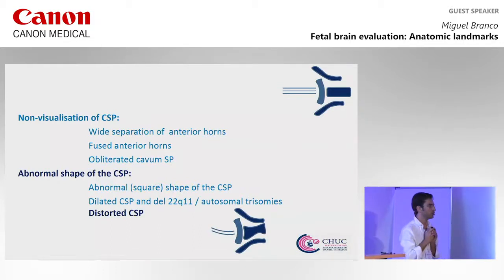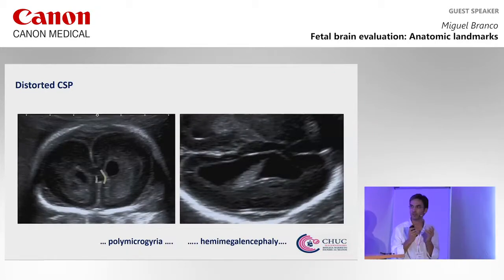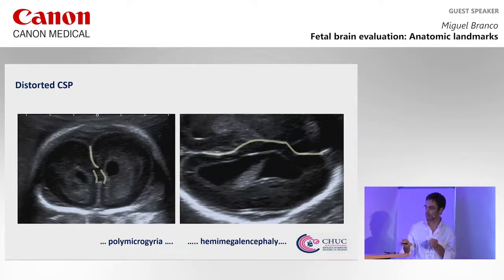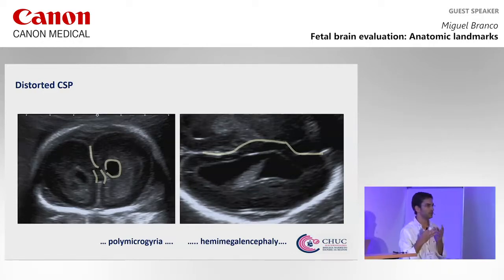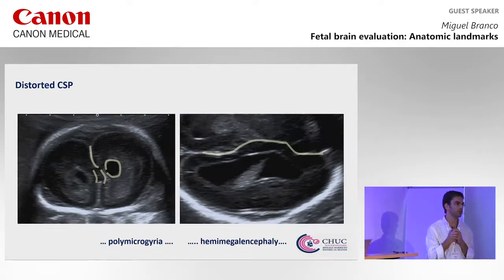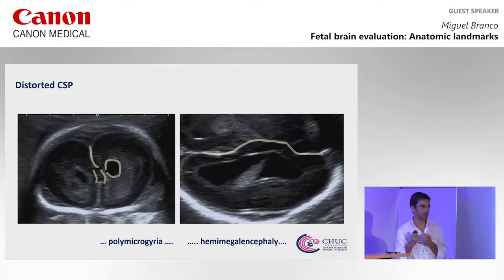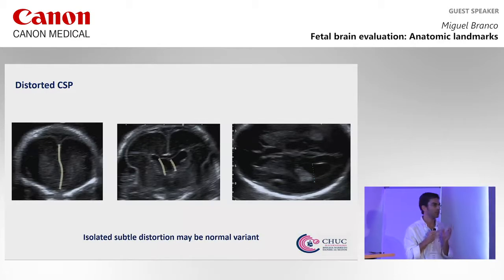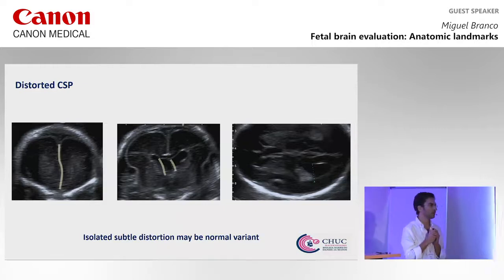The last situation is a distorted anterior complex, which can range a lot. In this case we have a really distorted midline, some heterogeneity, and a rounded anterior horn of the ventricle — very suggestive of malformation of cortical development. In this case it was hemimegalencephaly and polymicrogyria. On the other hand, we can have more subtle distortion of the anterior complex, and if everything else is normal, that situation is also normal.